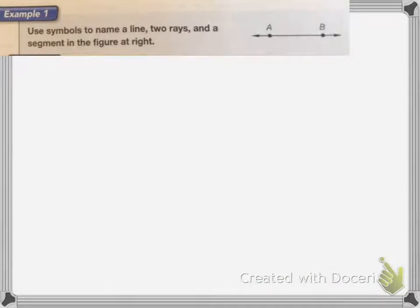So here, we want to use symbols to name a line, two rays, and the segment in this figure on the right. To name the line, the line is line AB, because that's the letters listed on our line. To show that it's a line, you're going to draw a line on top of it. Now, a line has to have two arrows, because a line goes on forever.